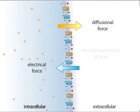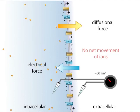At this point, there is no net movement of potassium ions into or out of the cell. The electrical potential across the membrane can be measured by inserting an electrode into the cell.